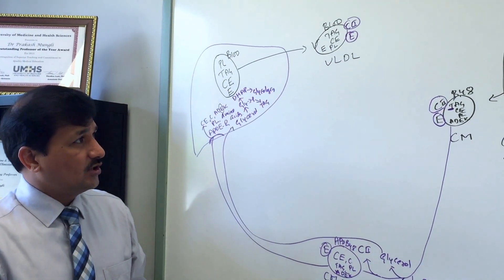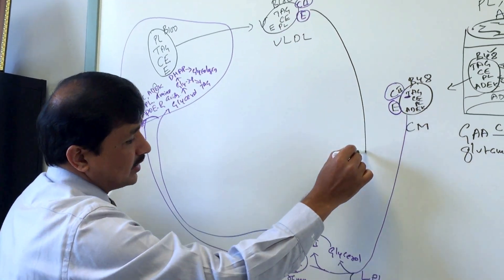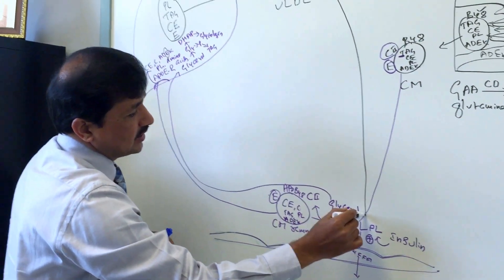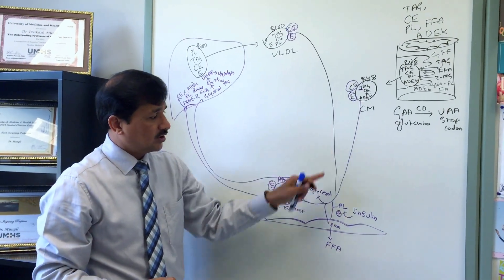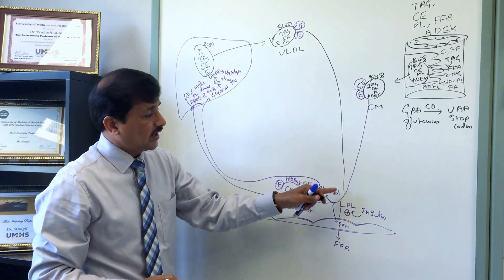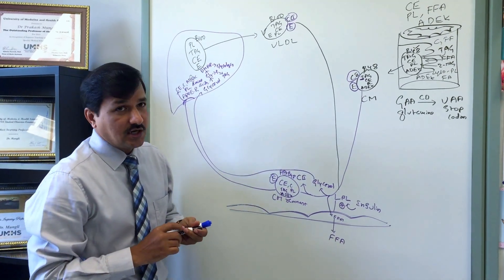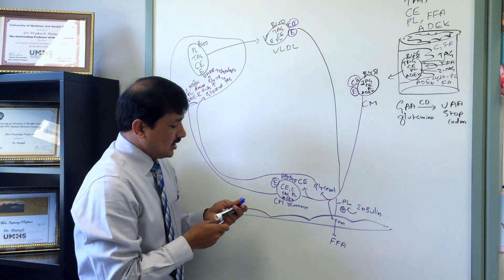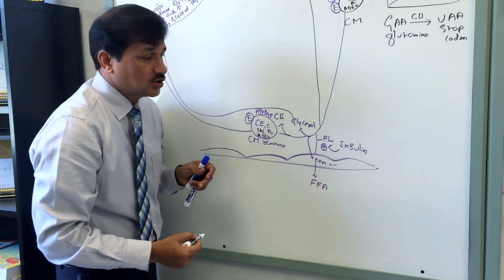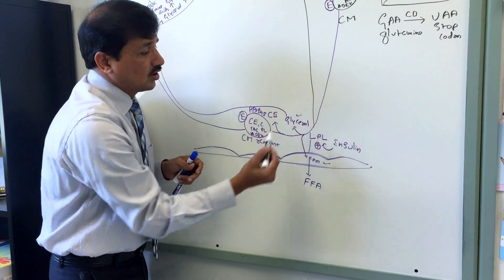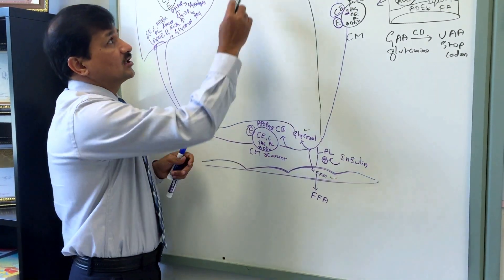The mature VLDL passes through LPL — lipoprotein lipase attached to the endothelium — the same enzyme that acted on chylomicrons. LPL now acts on VLDL, degrading its triacylglycerol and releasing free fatty acids taken up by peripheral tissues, along with glycerol.